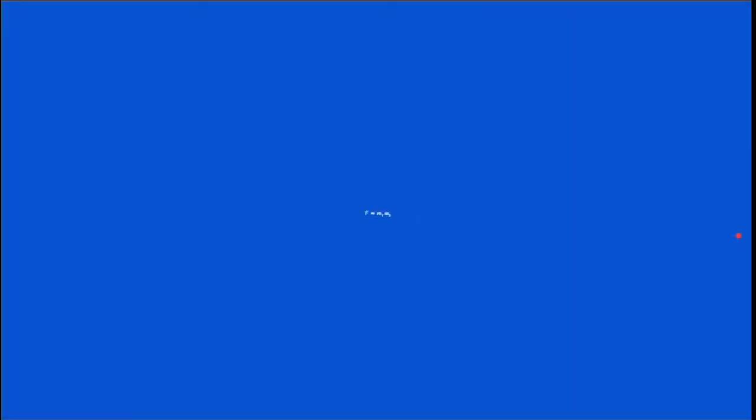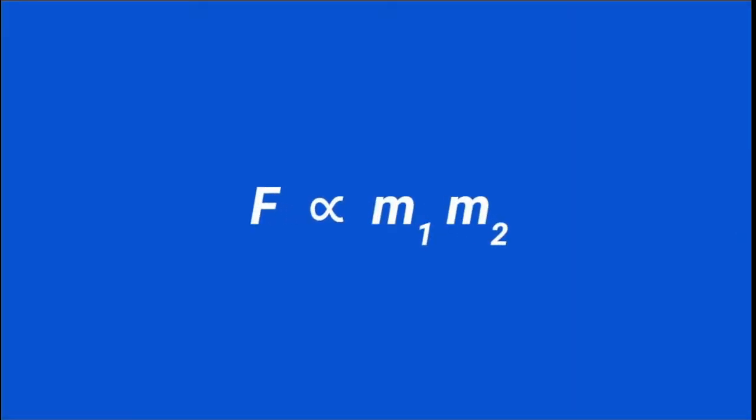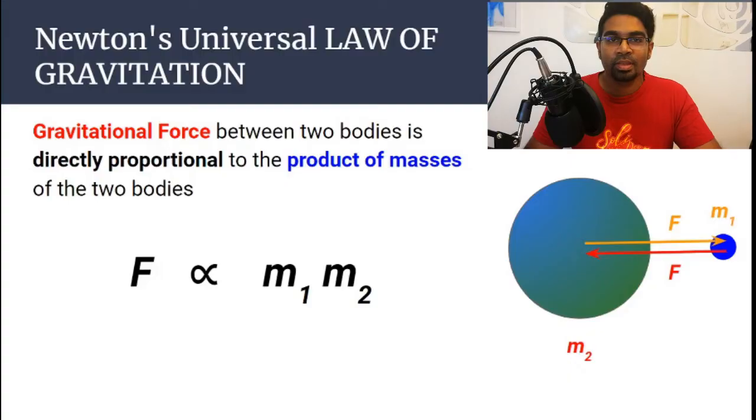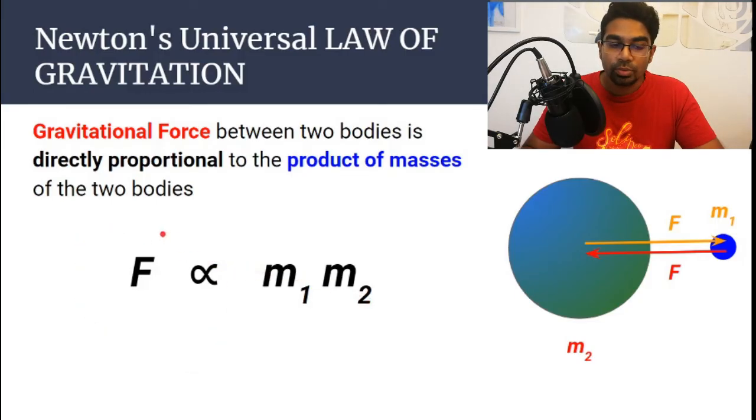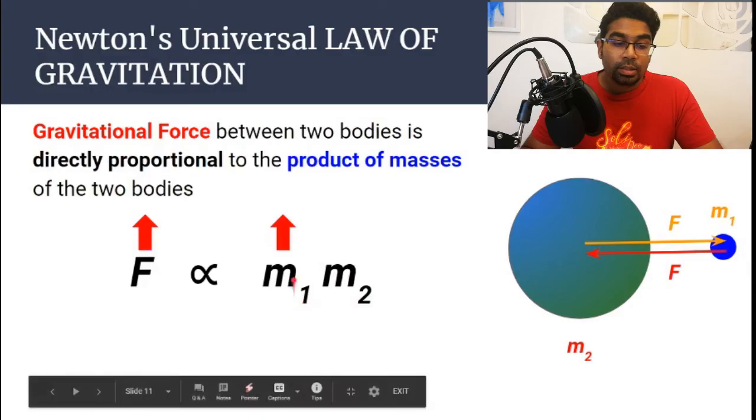The first thing is that the gravitational force between two bodies is directly proportional to the product of masses of the two bodies. That means that the gravitational force is directly proportional to m₁ multiplied by m₂. What is the implication of this? When m₁ increases, then the gravitational force will increase as well. The same goes to m₂.